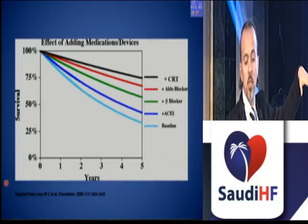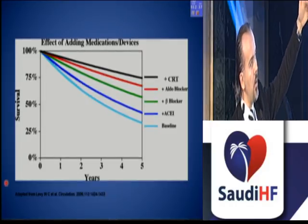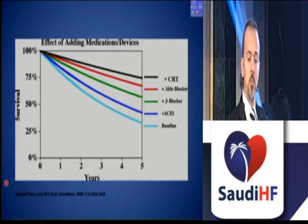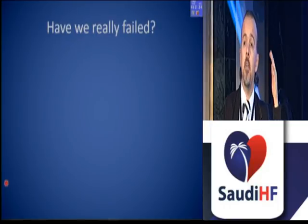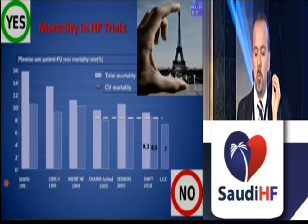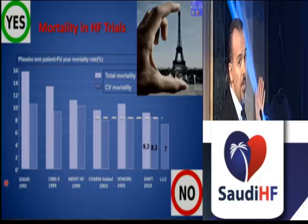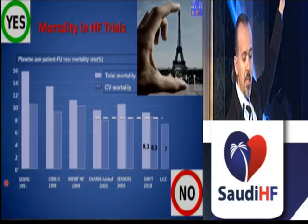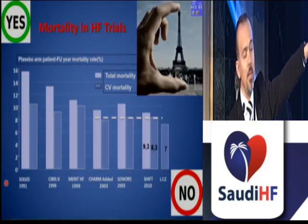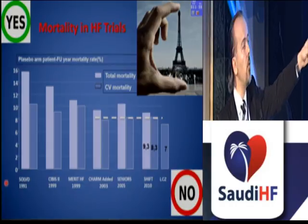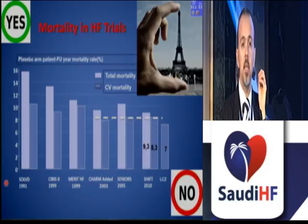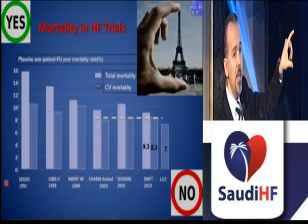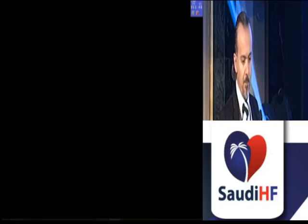When we see the cumulative effect of adding medications and devices — ACE inhibition, beta-blockers, aldosterone blockers (MRAs), and CRT — we have very good improvement in managing HFrEF patients. The main question: have we really failed? It depends on perspective. The SOLVD trial published in 1991 showed a placebo-arm annual mortality of about 16%. We have come down to around 7% with the latest therapies — such as the LCIA study you will soon hear about. So we have not failed. But from the perspective of 7% mortality, we still have more steps to overcome. Thank you very much for your attention.